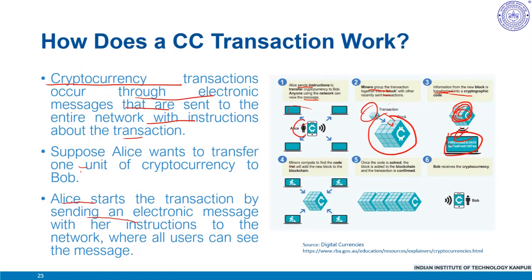The miners compete to find the code, and once they compute this mathematical puzzle, the new block will be added to the blockchain. Once a miner successfully solves the code, other users of the network verify the solution via proof-of-work mechanism and reach an agreement that the solution is valid. Therefore the block is verified, the new block of transactions is added to the end of the blockchain, and Alice's transaction is confirmed. This confirmation is not instant — it takes time for blocks of transactions to be processed. If successful, Bob receives the cryptocurrency.